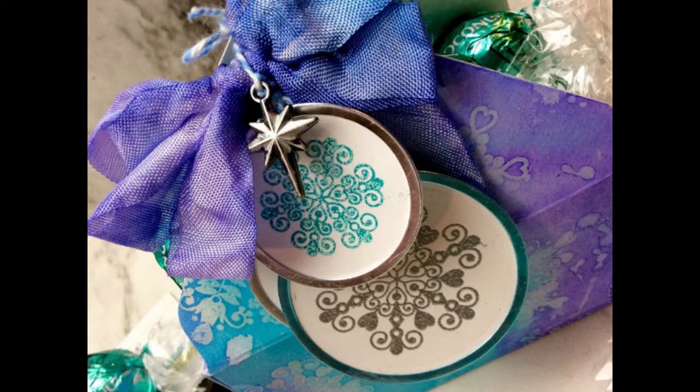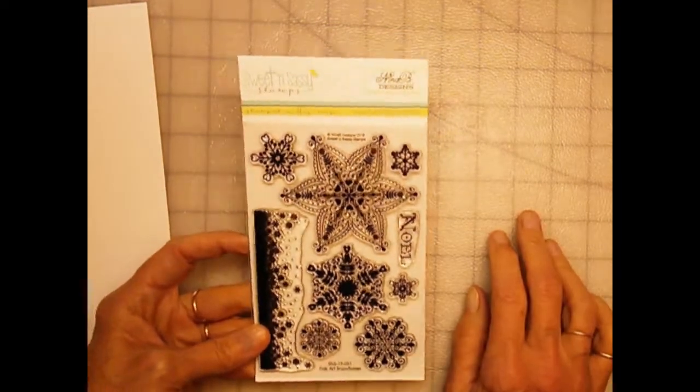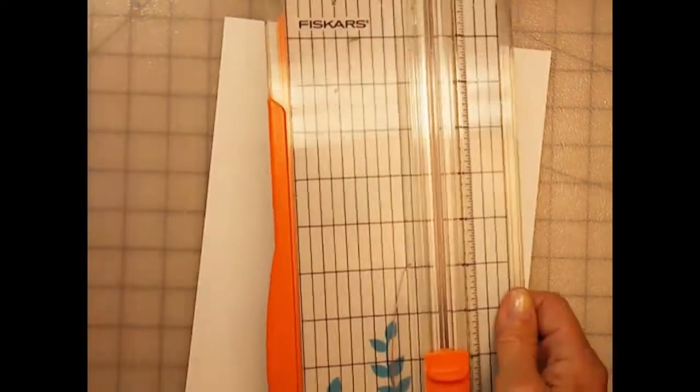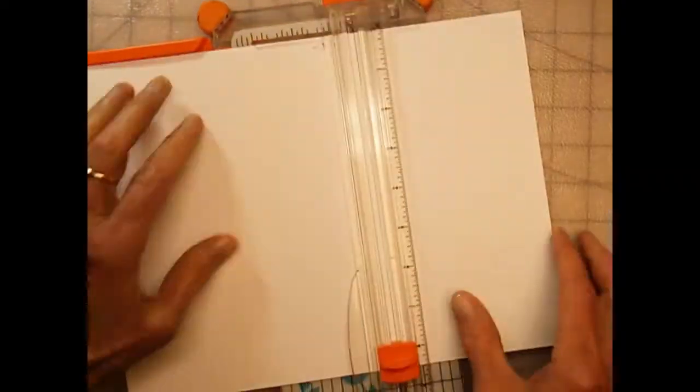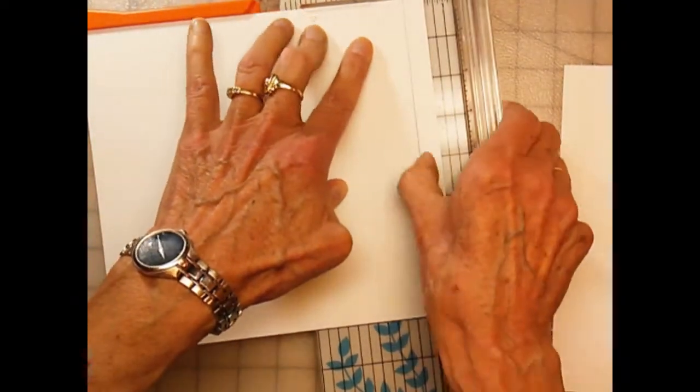I ended up using the Folk Art Snowflakes stamp set from Sweet and Sassy and I just love the size of the snowflakes and thought it was really cool. I'm going to create a box. So the first thing I did was grab a piece of watercolor paper and trim it down to be 8x8 inches.